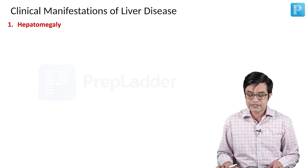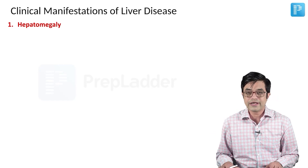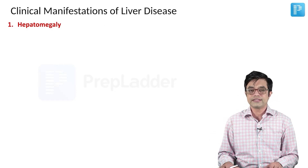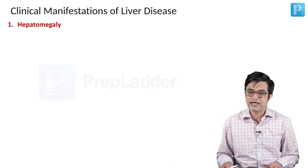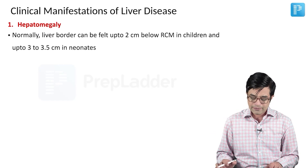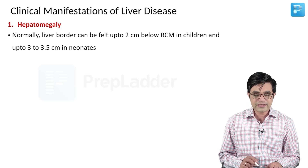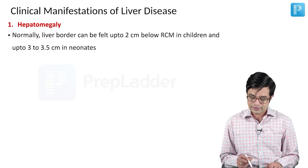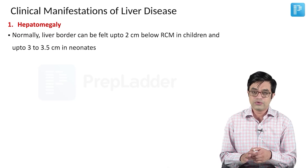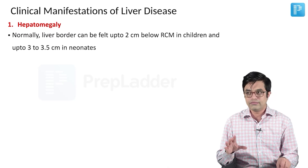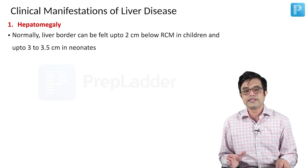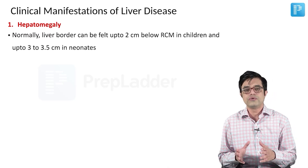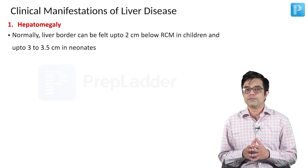The first clinical manifestation when a patient has liver disease is usually hepatomegaly. When we say hepatomegaly, on doing per-abdomen examination, you need to palpate the liver border.